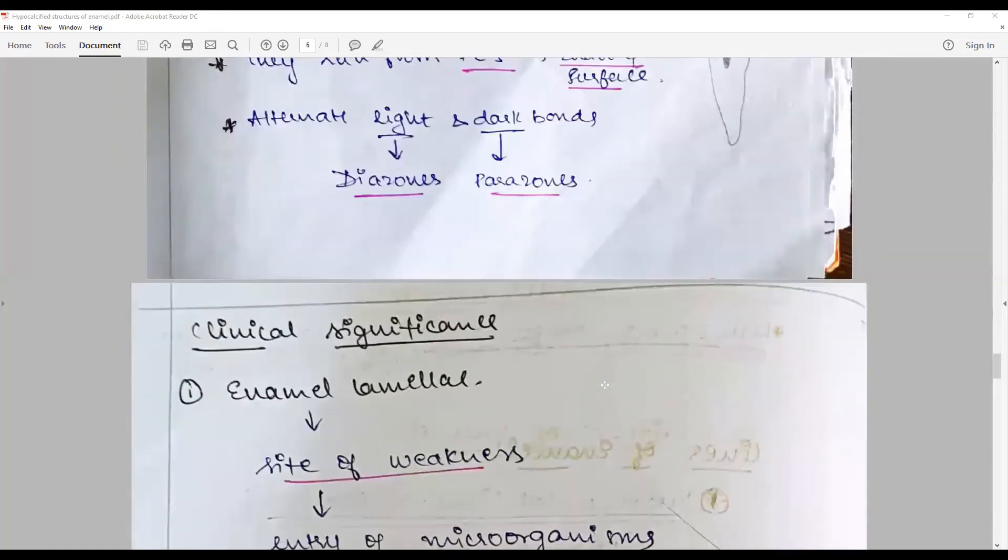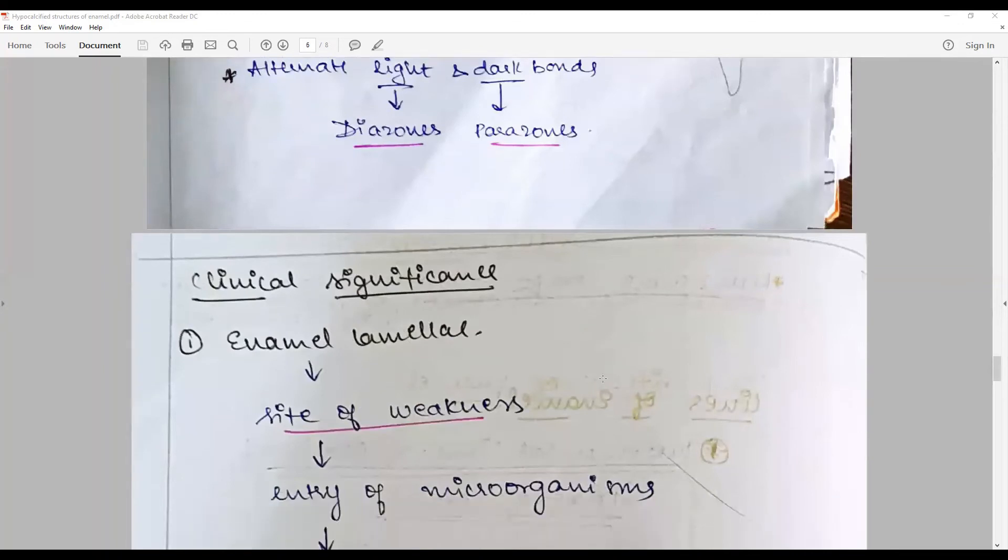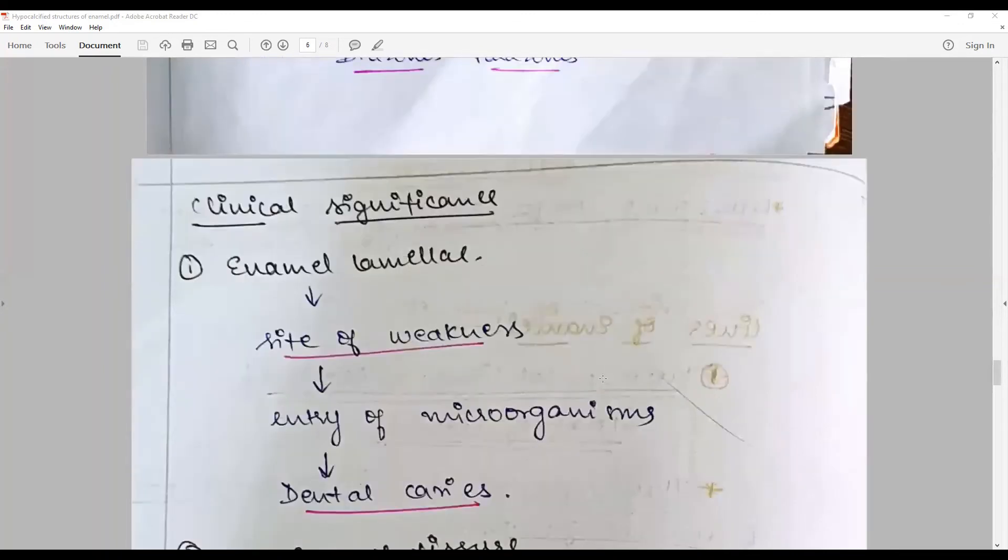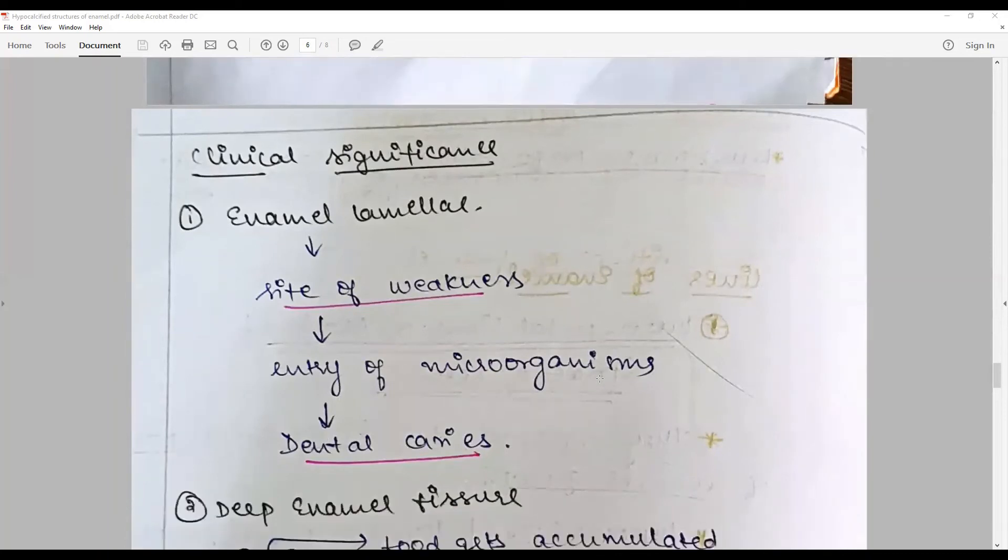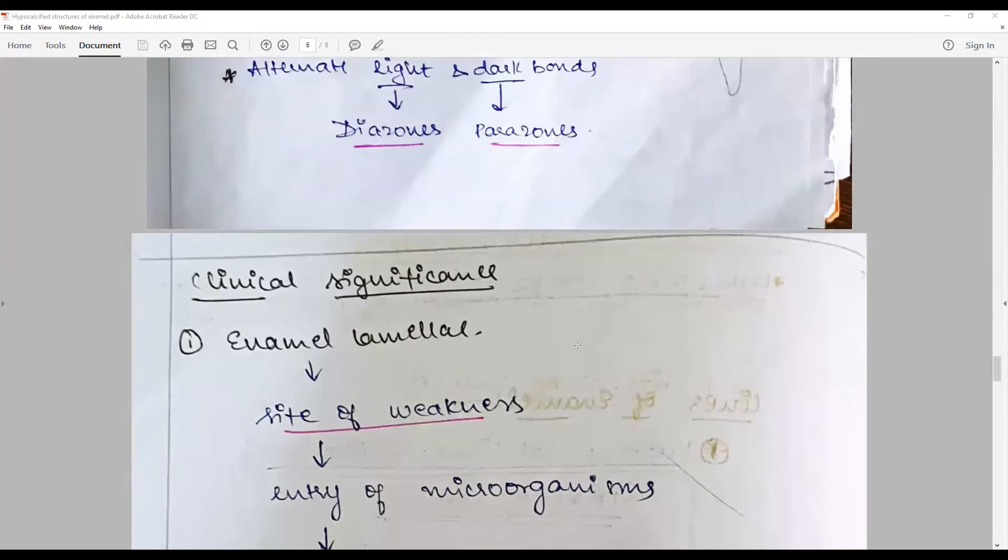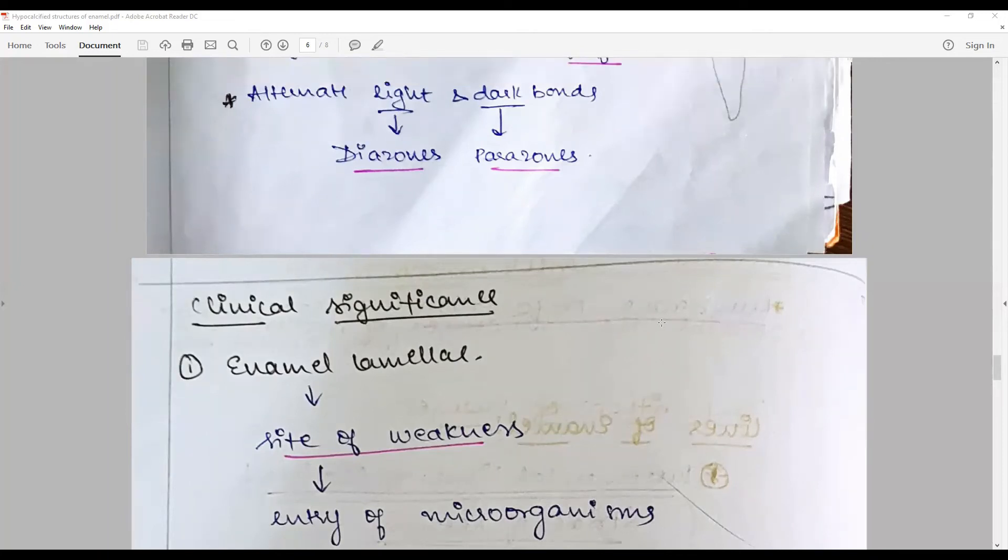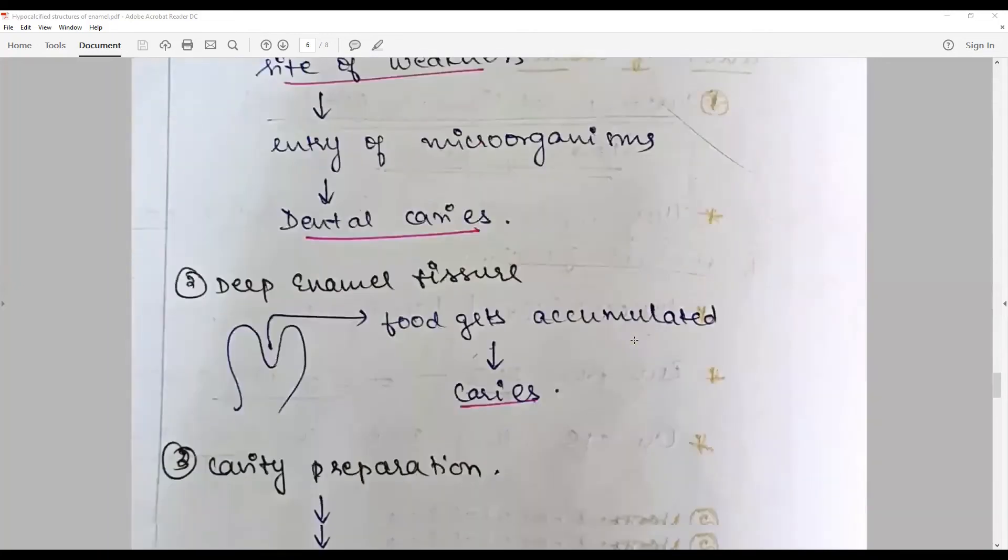Clinical significance: Enamel lamellae are sites of weakness and a portal of entry for microorganisms, hence making the tooth susceptible to dental caries. For DEJ, we have to make sure that we place the base of our dental cavity preparations at the dentin, not in the enamel.